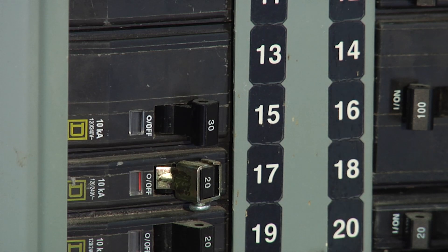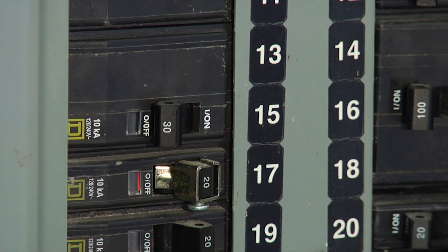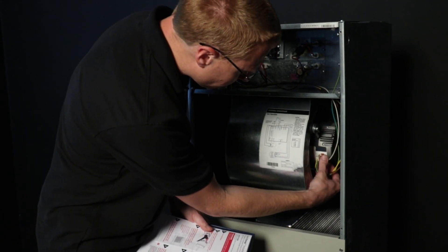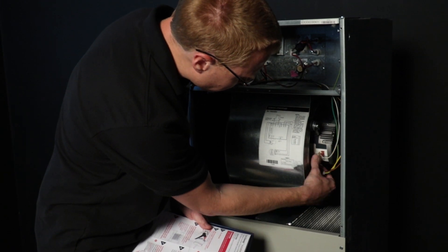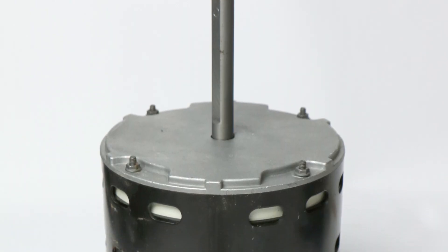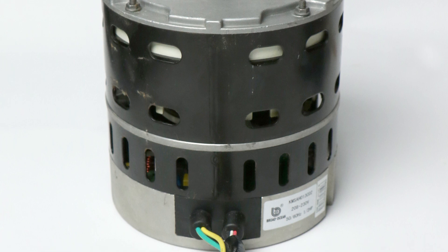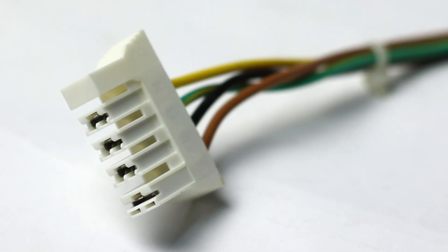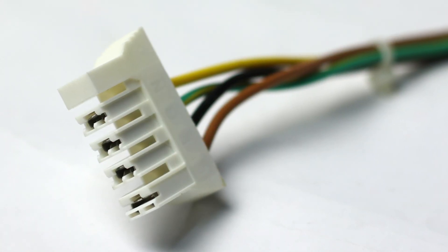The first thing you need to do is turn off power to the air handler. Verify that you have a constant torque blower motor such as an X13 or Selectek constant torque ECM motor. These types of motors typically have a plug that looks like this and one or multiple thermostat wires attached to them.